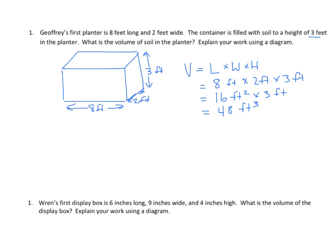If we look at the homework problem, we have much the same thing. The numbers are different, but again we have a length, a width, and a height. We have different units here, so we need to attend to the correct units. We need to draw a diagram — make a sketch of a rectangular prism, label the dimensions, and do the very basic calculation. Don't forget to attend to your units.